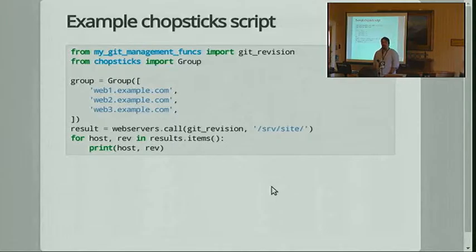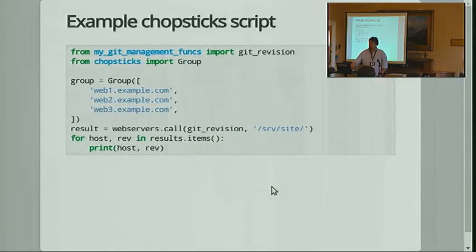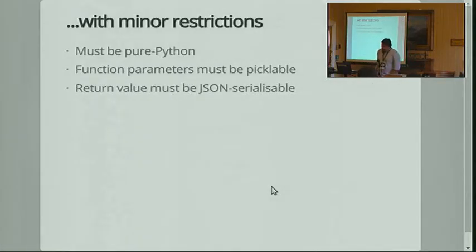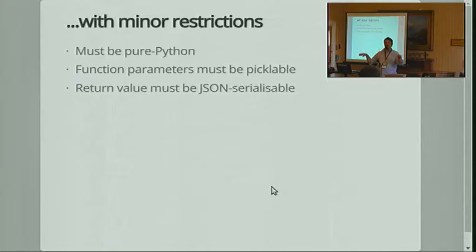That will work with any picklable function and picklable arguments, but the return value has to be JSON serializable. This is a restriction I put in because of the security model. I'm running code on my laptop against a bunch of servers. If any of those servers were compromised, I don't want my laptop to be compromised — pickles are insecure. If I'm executing arbitrary code on the remote machines, that's fine, but I don't want execution of arbitrary code on my machine.